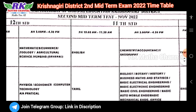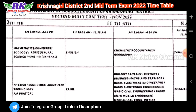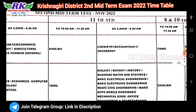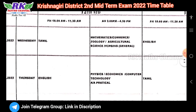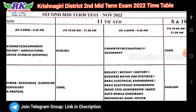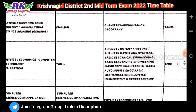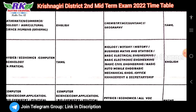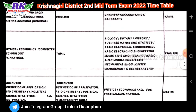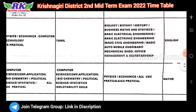Now for plus one: November 16th morning is English. Afternoon is chemistry, accountancy, and geography. November 17th morning is Tamil. Afternoon is biology, botany, history, business maths and statistics, basic electrical engineering, basic electronic engineering, and basic civil engineering.